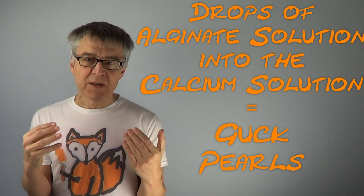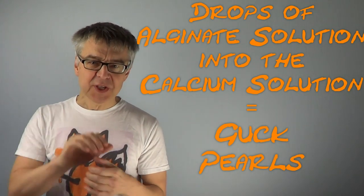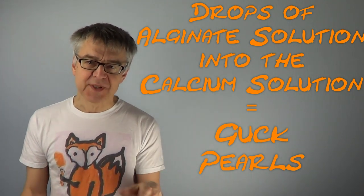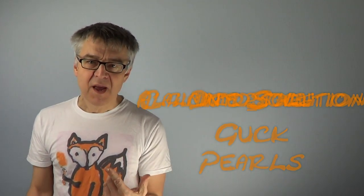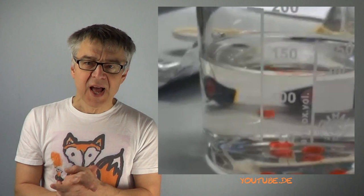But back to our gug pearls. We slowly, one drop after the other, add the alginate solution to the calcium solution, which we stir constantly. The alginate droplets get covered immediately with the gel-like skin of calcium alginate.